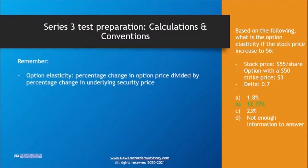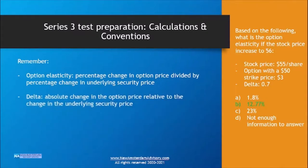Key takeaways: option elasticity is a relative change — the percentage change in option price divided by the percentage change in the underlying security price. The delta is a measure of absolute change, showing the absolute change in option price relative to the change in the underlying security price. With these elements, we calculated the option elasticity as 12.77%.